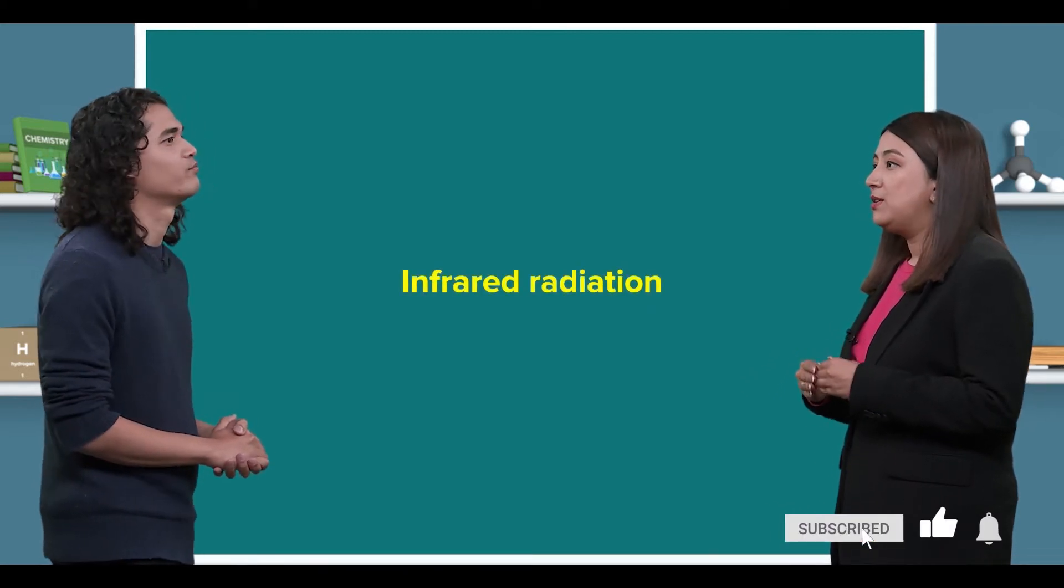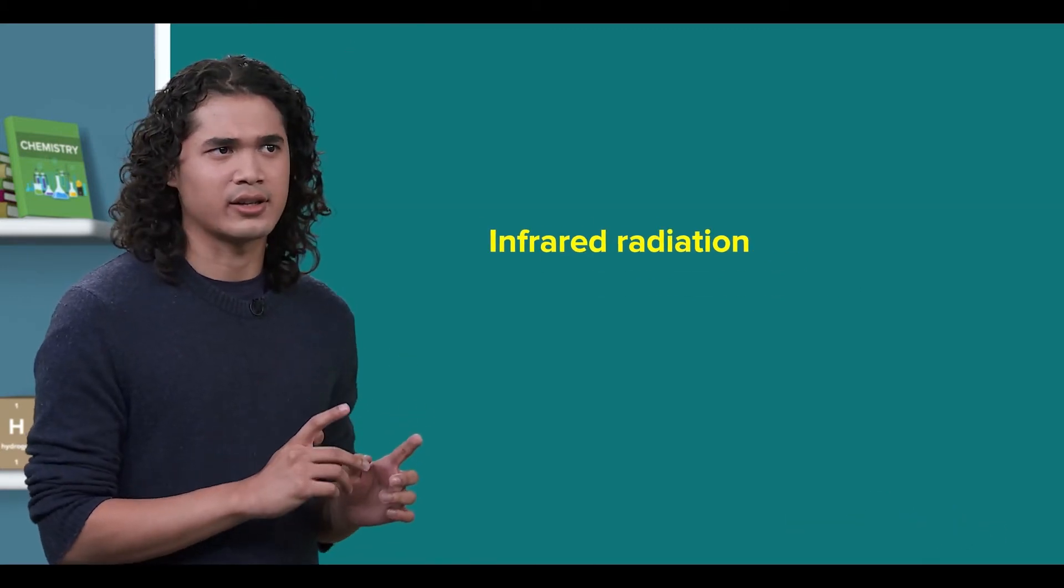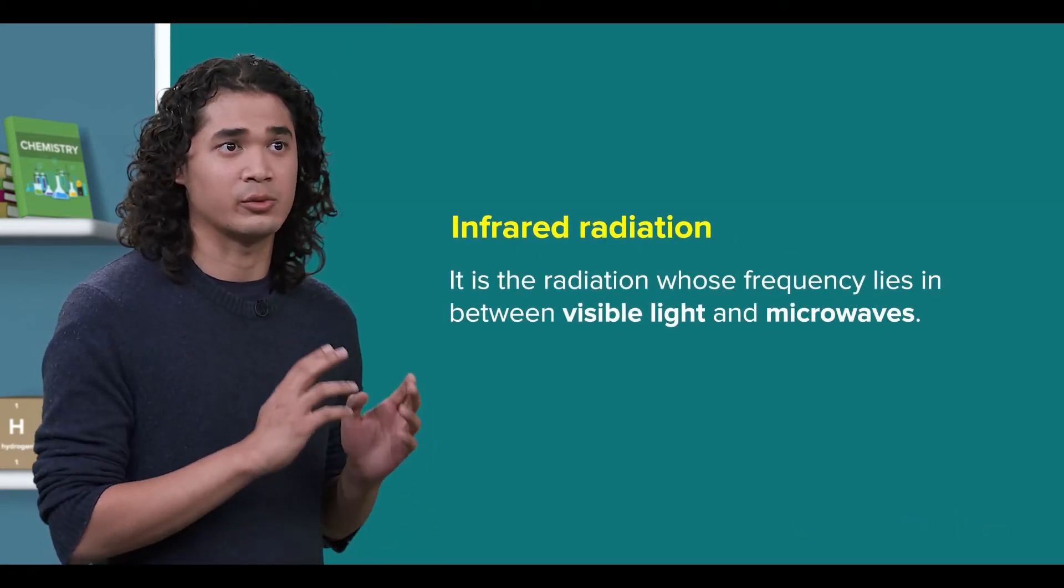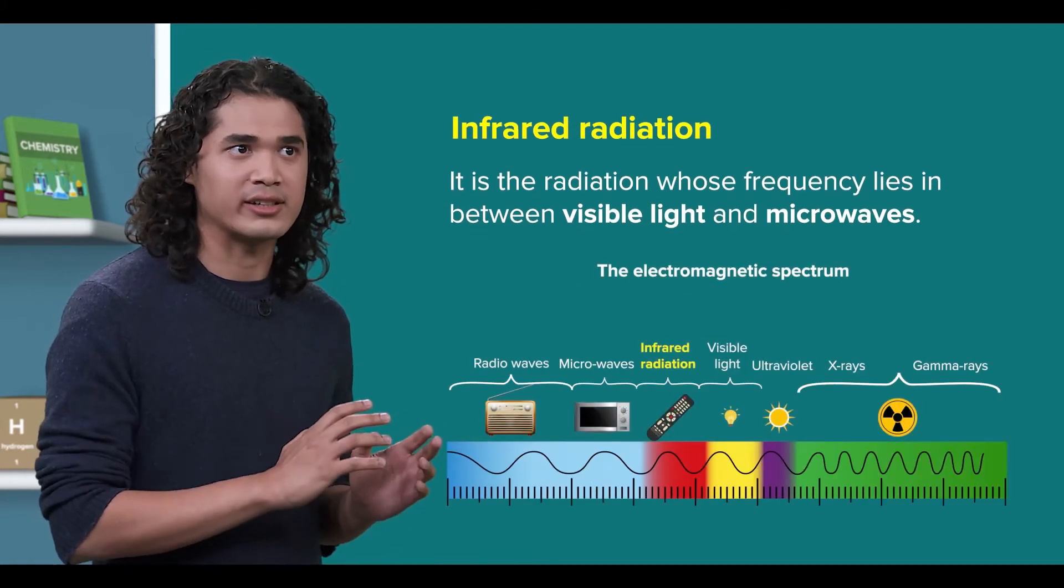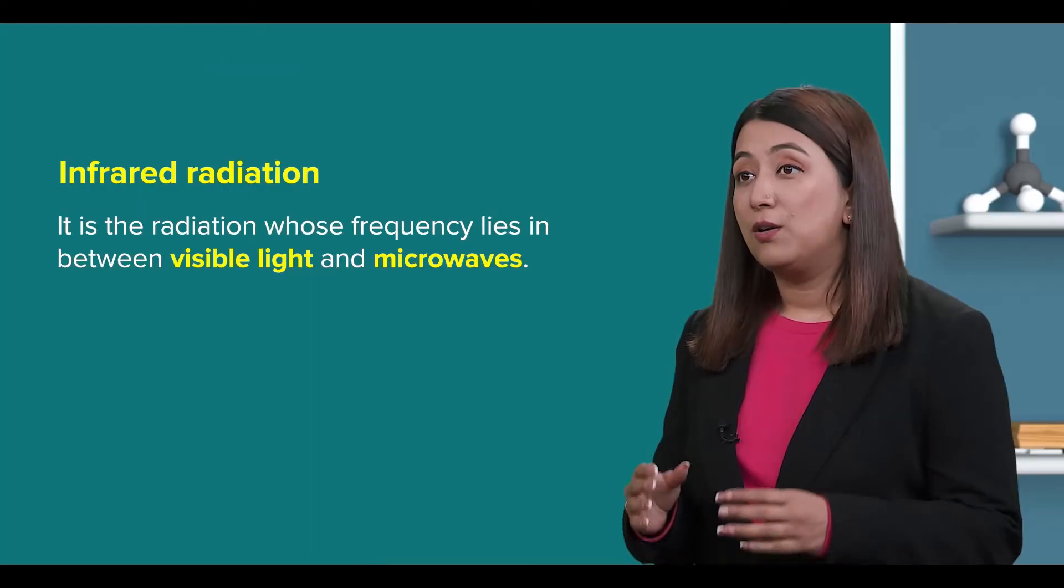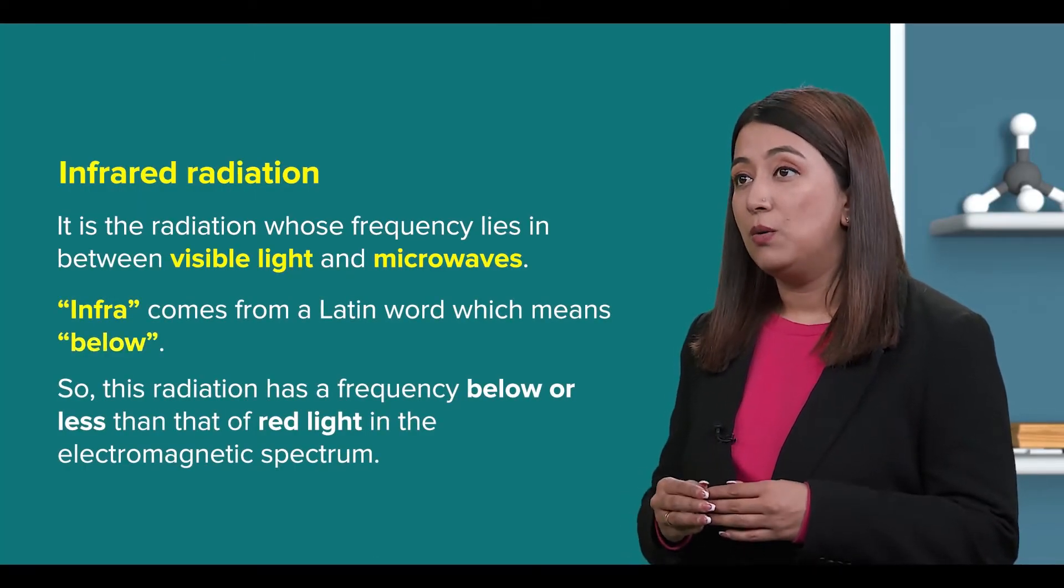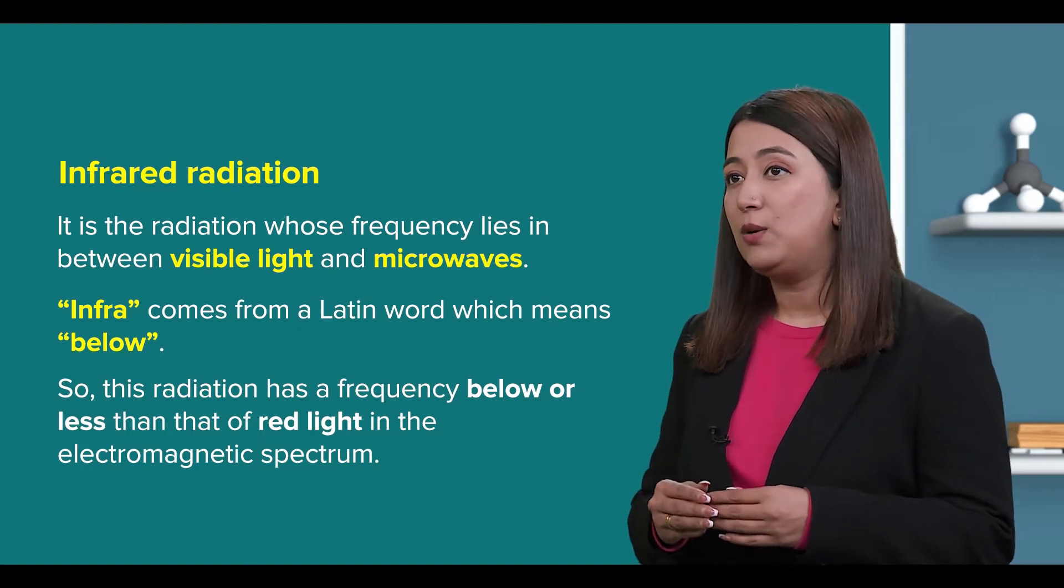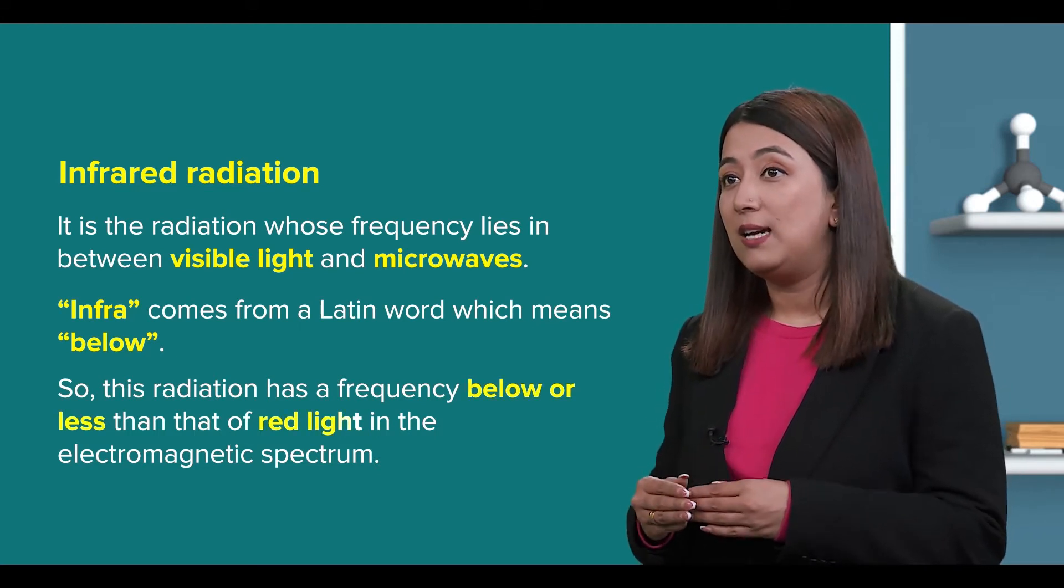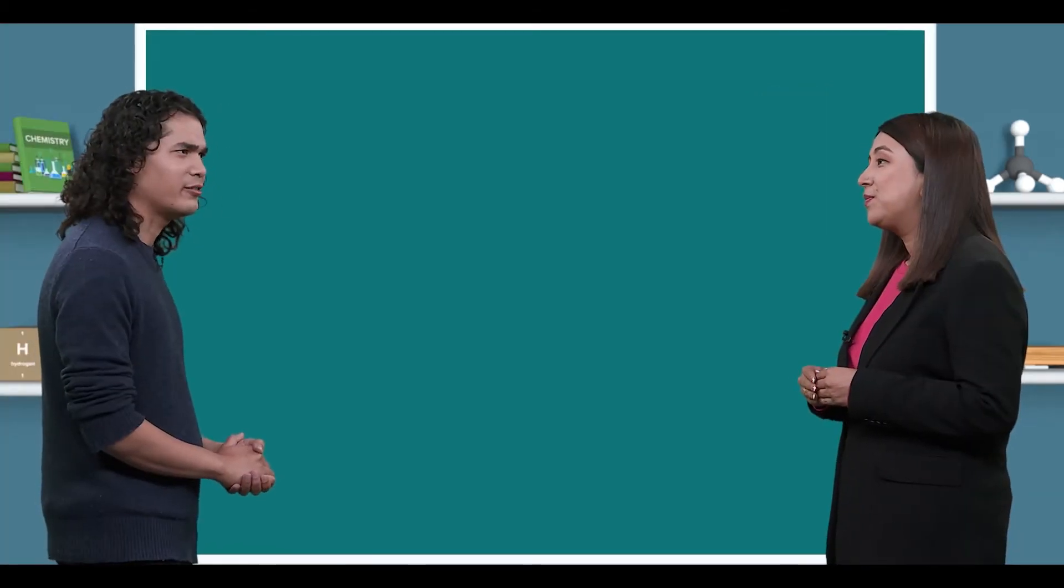First, what do you know about infrared radiation? Let me recall - I studied this in physics. Infrared radiation is the radiation whose frequency lies in between visible light and microwaves. Correct. Infra comes from a Latin word which means below, so this radiation has a frequency below or less than that of red light in the electromagnetic spectrum.